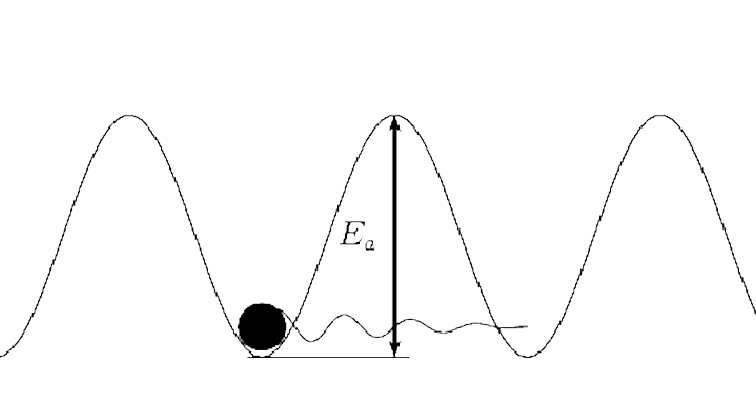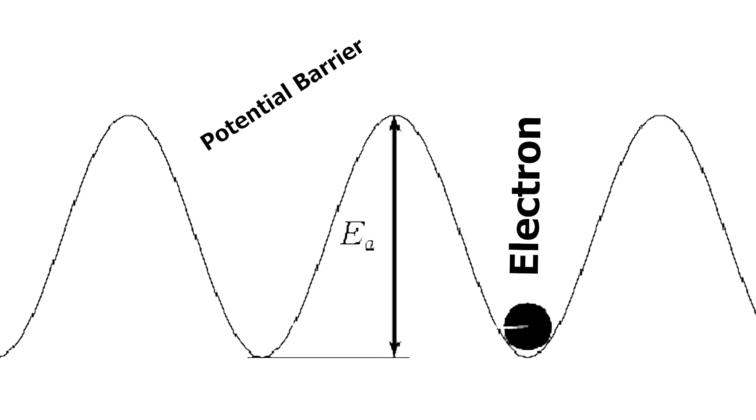In the quantum world, things behave quite a lot differently. A particle in the quantum world actually can pass through that valley, maybe without even rolling over it. Here we have an electron in the place of a real-life wall, and a potential barrier in place of the valley.